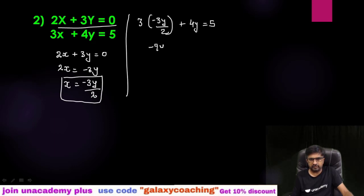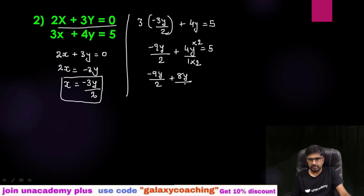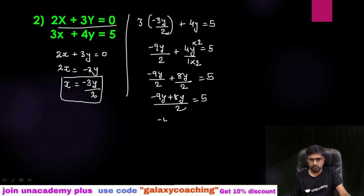In the second equation, on the place of x put minus 3y by 2, then plus 4y equals 5. So here you get minus 9y by 2 plus 4y equals 5. The problem arises when students don't know how to add this. First you need to find the LCM — here the LCM will be 2 — so multiply to get minus 9y by 2 plus 8y by 2, and now you can add them: minus 9y plus 8y.